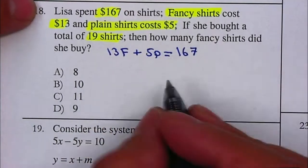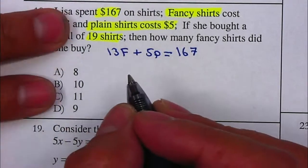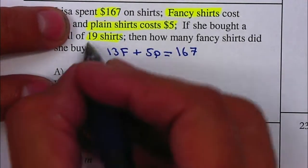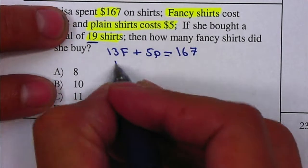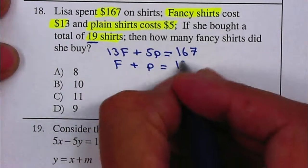Now, because we have two variables, F and P, we are going to need two equations. The second equation will come from how many items we have. The number of fancy shirts plus the number of plain shirts will equal 19.